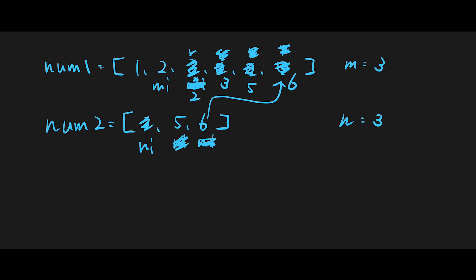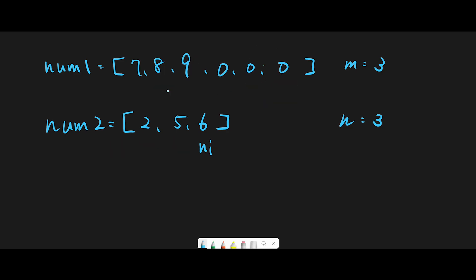n_index moves left and is now minus 1, so we stop iteration. We don't have to return anything. We've created the merged array: 1, 2, 2, 3, 5, 6. One important thing: how many times do we iterate? My answer is: until n_index reaches minus 1.